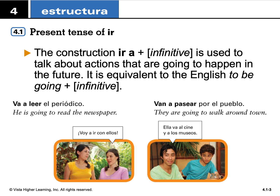When building sentences and looking at the building blocks, ir a would be followed by a place or possibly a verb. For example, 'I'm going to brush my hair' — voy a, and then the infinitive form: sepillar, so voy a sepillarme el pelo. Or 'I'm going to read' — voy a leer. When following the verb to go, we have to use the infinitive form and not a conjugated form.